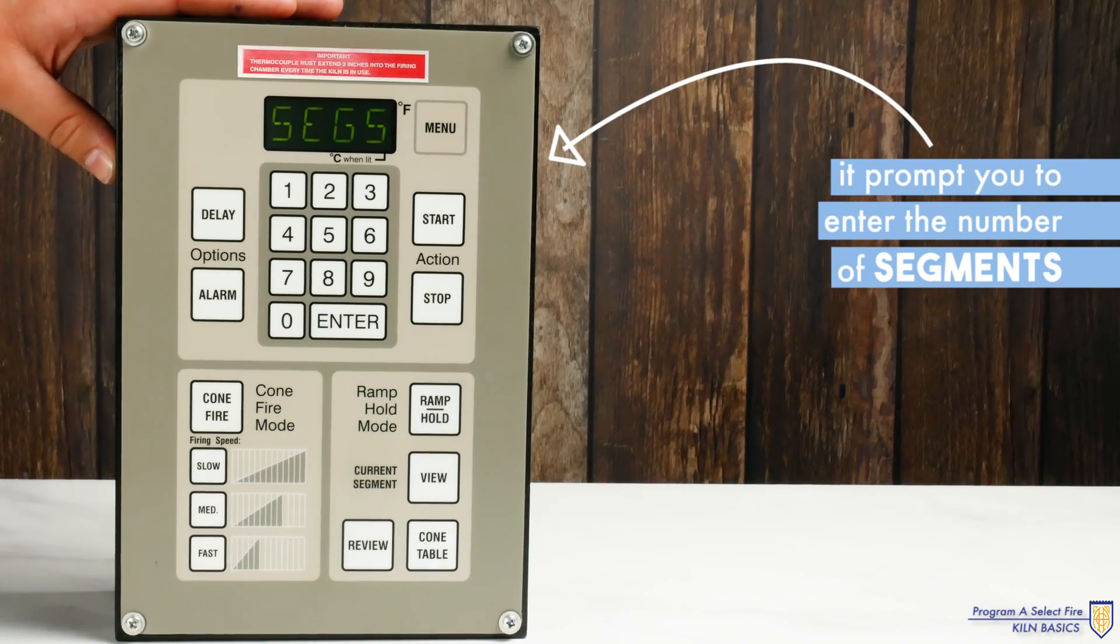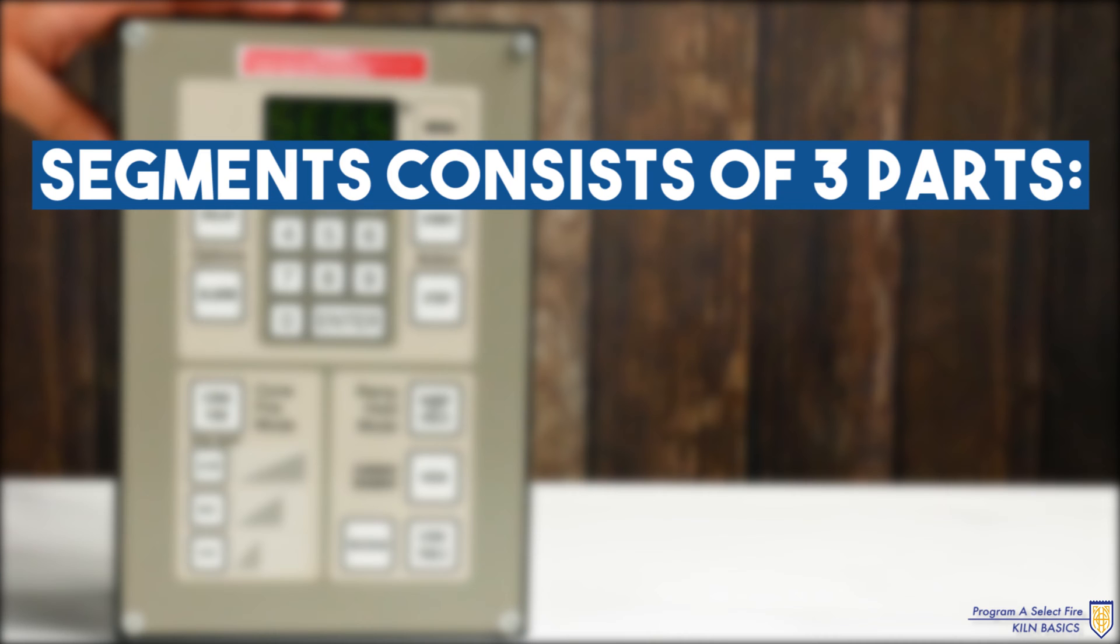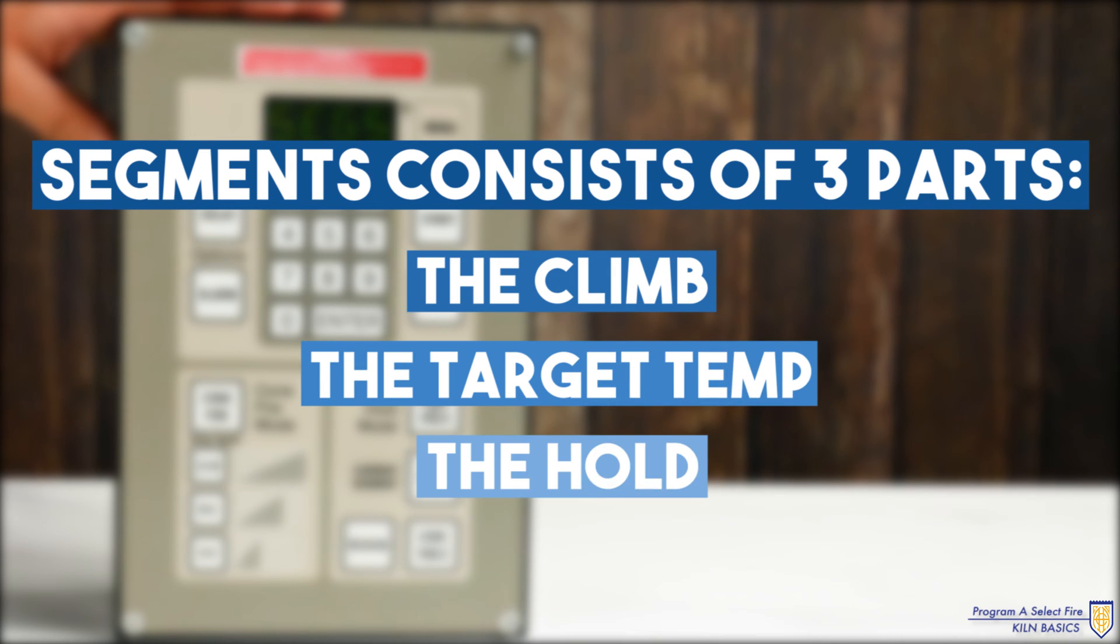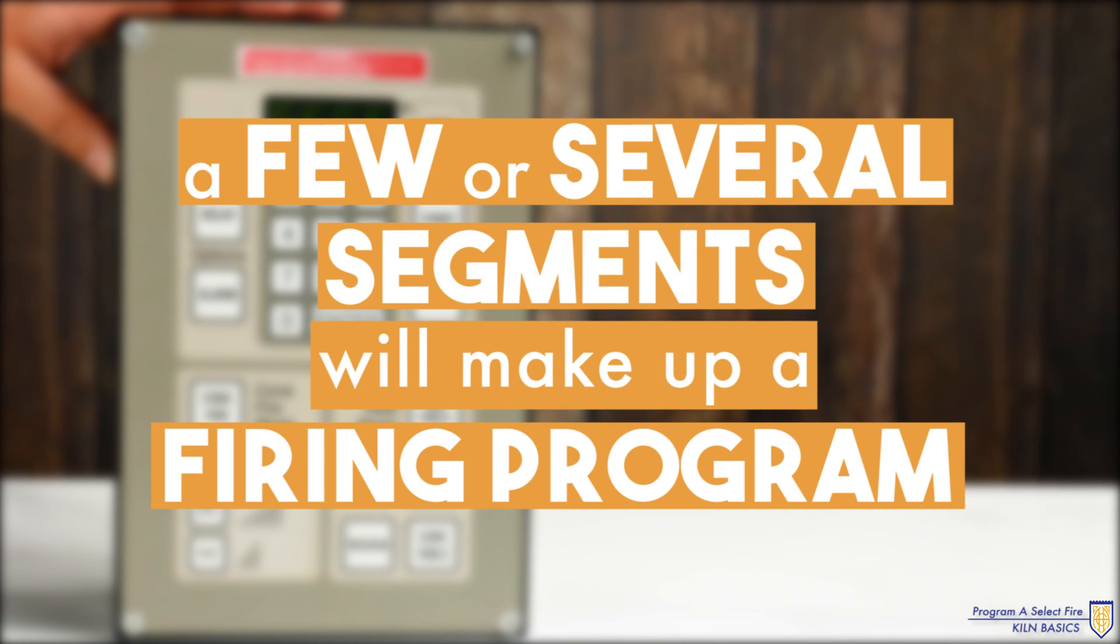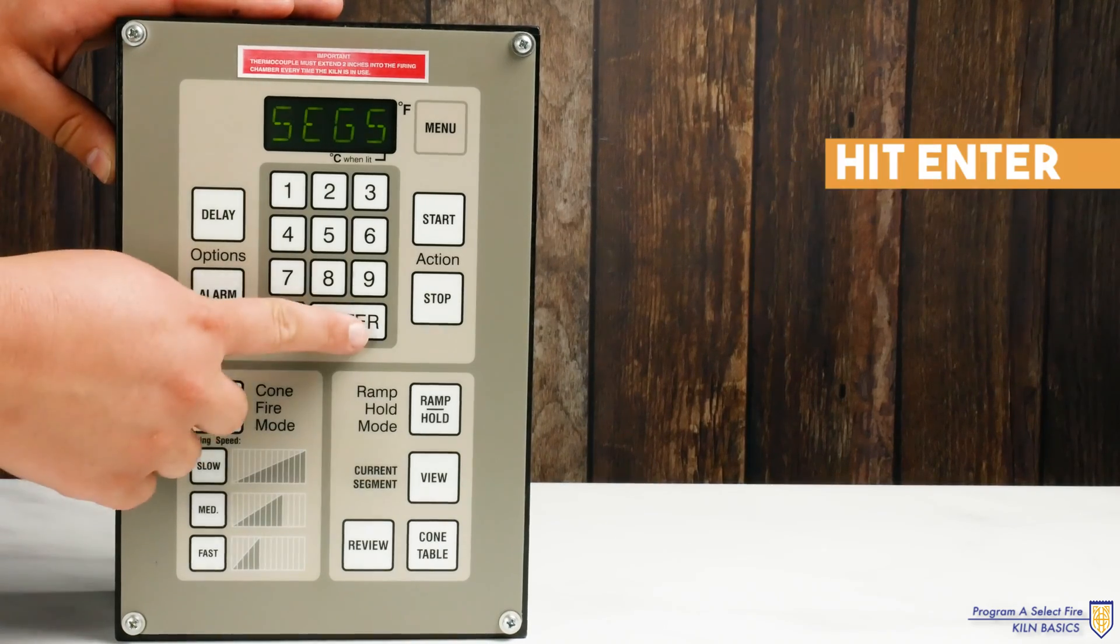Next it will prompt you to enter the number of segments. A segment consists of three parts: the climb, the target temp, and the hold. A few or several segments will make up a firing program. For this particular program we will be using four. Hit enter.